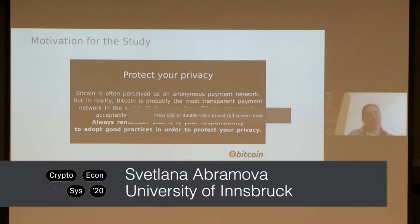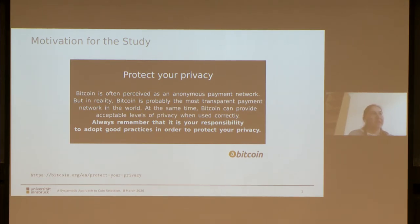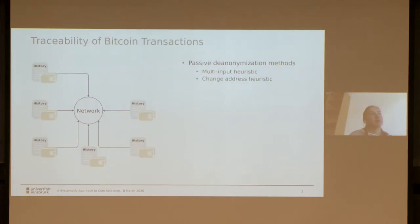Before I start, I'd like to give a short motivation for this study. Since the introduction of Bitcoin, it was often perceived as an anonymous payment network. A quote from the Bitcoin Core website nicely summarizes what we know: Bitcoin is actually the most transparent payment network in the world, yet it can provide some levels of privacy, but only when used correctly. It is the responsibility of Bitcoin users to adopt good practices and protect their own privacy. Bitcoin transactions are public, the blockchain is public, and each coin has its own history. You can use the blockchain to trace the transaction graph back to the roots.